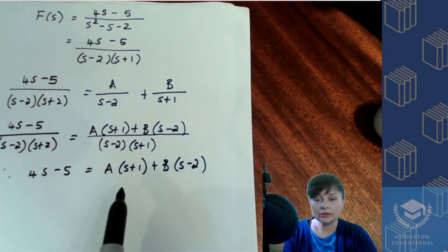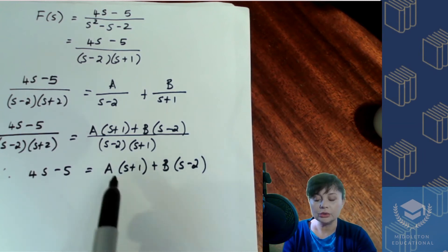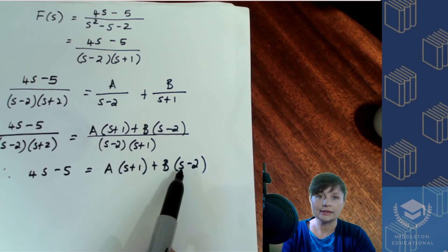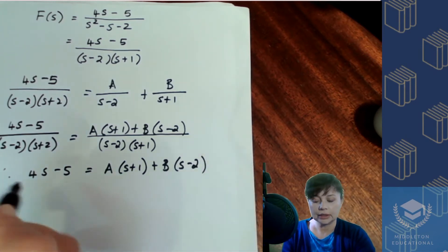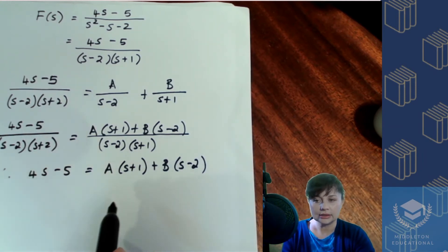Okay, now we can solve for a and b. And there are two ways that you can do this. You can either multiply out these brackets and then equate like terms, or you can choose values for s so that one of the terms adds up to zero. So I'm going to do the second way because it's the easiest one in this case.